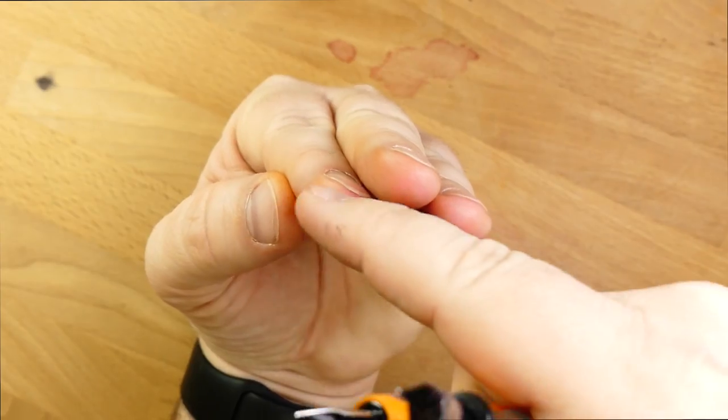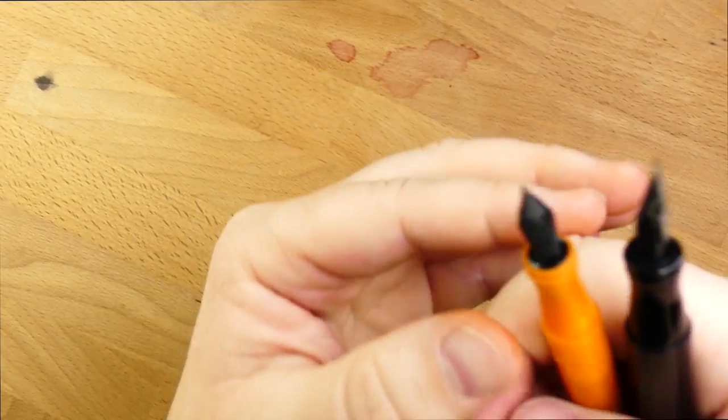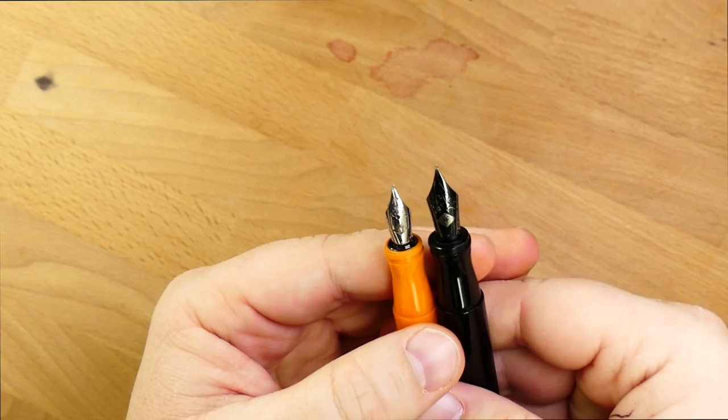When you say number five or number six for Jowo nibs and Bock nibs and things like that, Schmidt, what they're referring to is the size across this collar here at the nib, where the nib goes around the feed. So this distance. Five or six millimeters. So not particularly large.